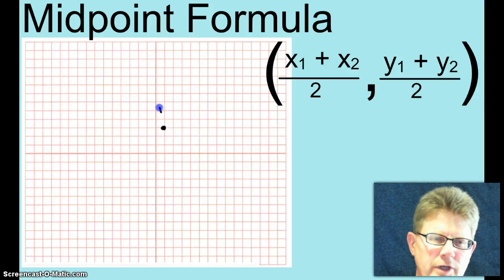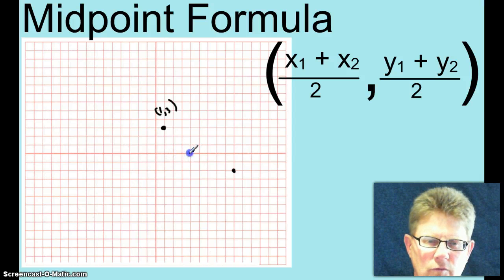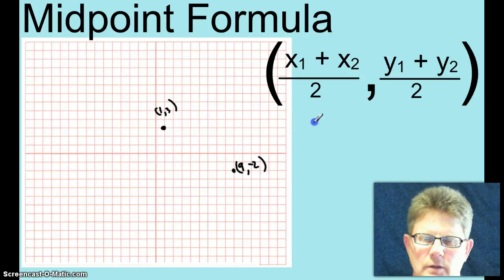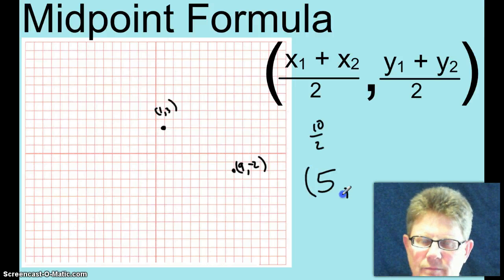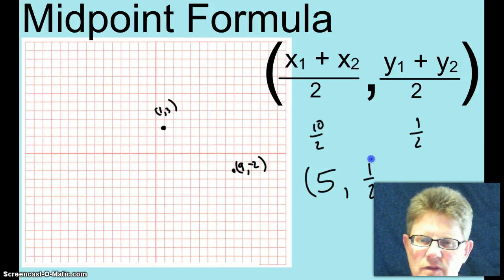Okay, this endpoint has coordinates of 1, 3. The coordinates of this point here are 9, negative 2. This formula says to add the two X values, 1 and 9. That's 10 divided by 2. The X coordinate is 5. And then add the Y coordinates. 3 plus negative 2 is 1 over 2.